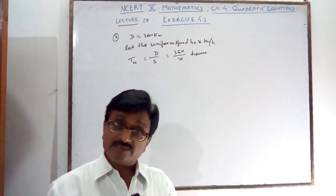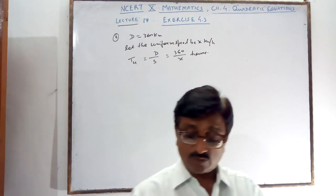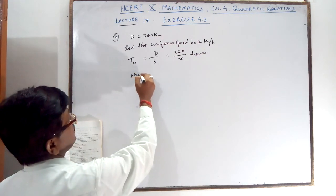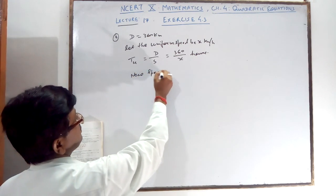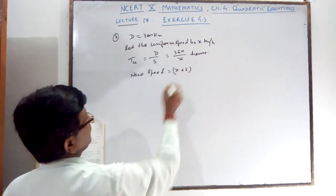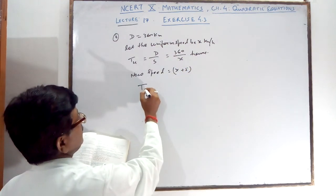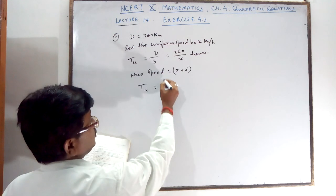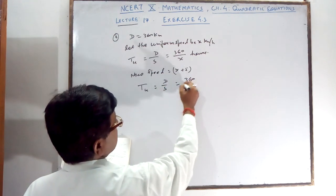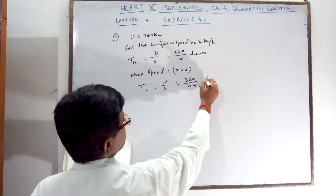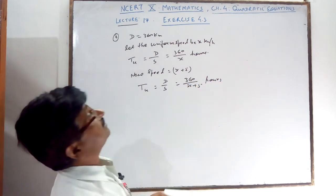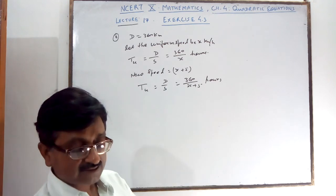If the speed has been 5 km more, the new speed is x plus 5. Then the new time will be — again by the formula distance upon speed — 360 upon x plus 5.